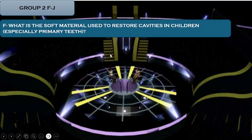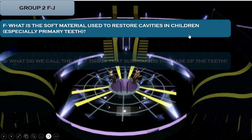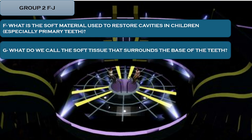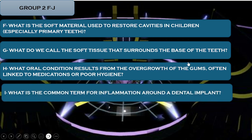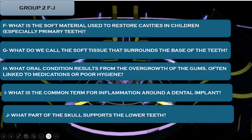Question one: what F is the soft material used to restore cavities in children, especially primary teeth? What G do we call the soft tissue that surrounds the base of the teeth? What oral condition starting with H results from the overgrowth of the gums, often linked to medication or poor hygiene? What I is the common term for inflammation around a dental implant? And finally, what J is the part of the skull that supports the lower teeth?